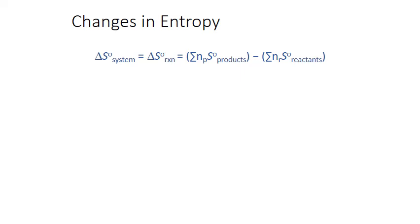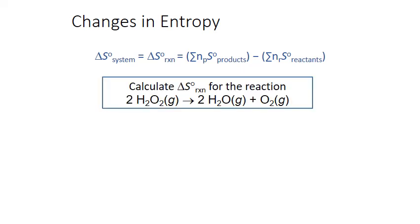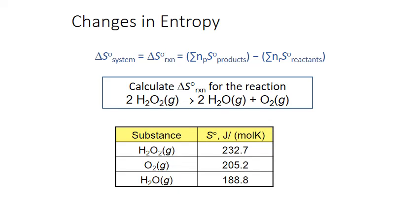Let's calculate the standard change in entropy for the decomposition of hydrogen peroxide, H2O2, into gaseous water and oxygen gas. The first step is to look up the absolute entropy values in a thermodynamic reference table. It's important to get the correct phase — for example, water appears in all three phases in the table. Since this process produces gaseous water, we use the absolute entropy value for the gas phase.